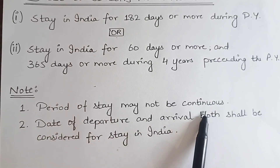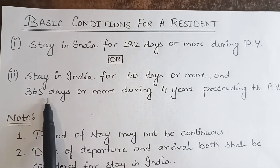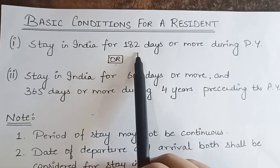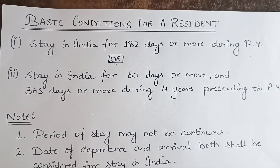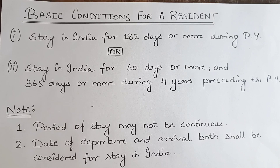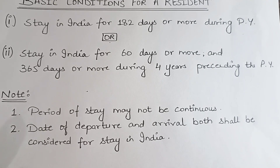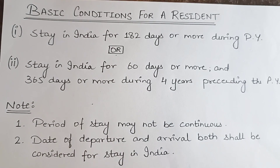Two important points: first, the period of stay need not be continuous. There is no need to be continuously 365 days or continuously 182 days in India. If someone came for a month, then another 4 months, we will count all of that. Second, the date of departure and arrival both shall be counted for the stay in India.